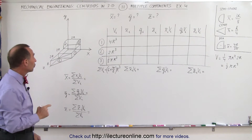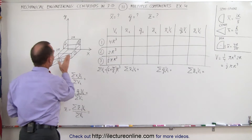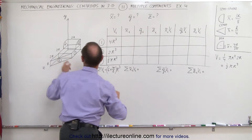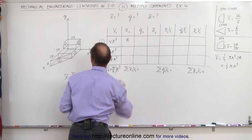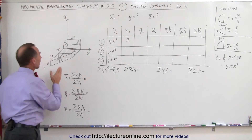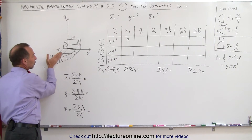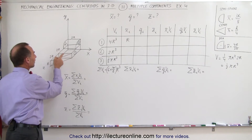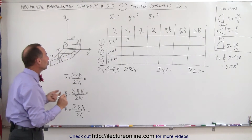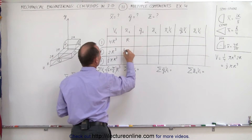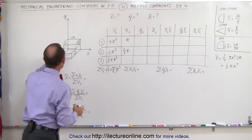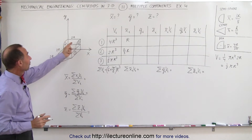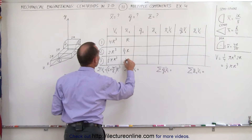Now we need to find the x-coordinate of each of the three objects. For object one, in the x-direction it's at the halfway point, which is half of 2r, so x̄₁ = r. For the triangular shape, the centroid is at one-third of the height, so x̄₂ = (1/3)(2r) = 2r/3. For the quarter cylinder, it's halfway along the length, so x̄₃ = r.